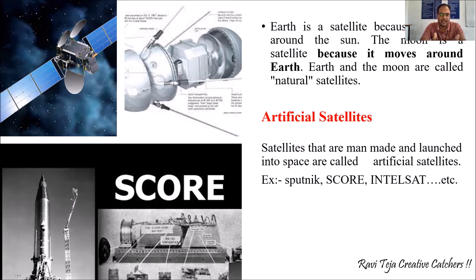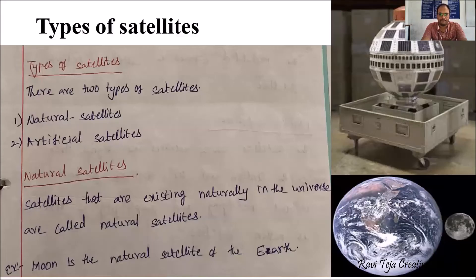Coming to artificial satellites, these are man-made and are sent into space, moving in orbits for the purpose of communication. Some examples of man-made or artificial satellites are Sputnik, Intelsat, and others. In the coming classes we are going to see different types of artificial satellites.